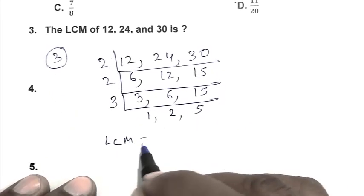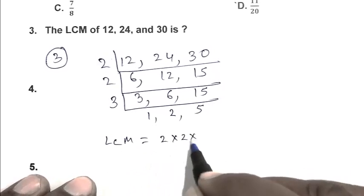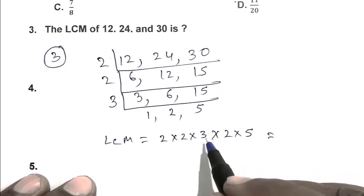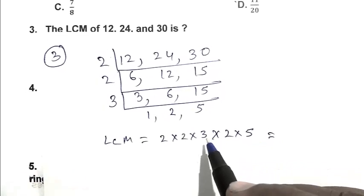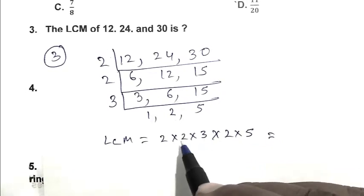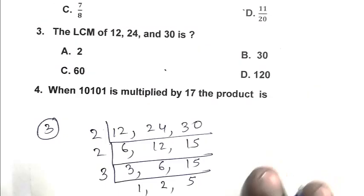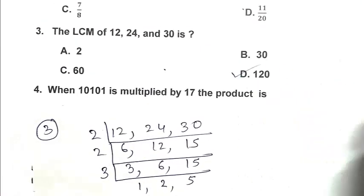So friend, the LCM is 2 multiplied by 2, multiplied by 3, multiplied by 2, multiplied by 5. That is 10, 30, 60, 120. So friend, D is the right answer.